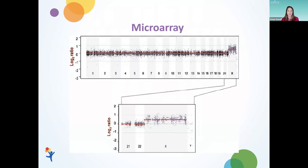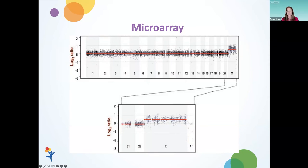We can also do genetic testing diagnostically with a microarray. A microarray is a microscopic test that uses little probes that attach along the length of the chromosome — this represents the length of chromosome 1, chromosome 2, chromosome 3, and so forth. Because we have pairs of chromosomes, we would anticipate two copies of each probe along the length. What we see that's diagnostic in this result is an over-representation of the probes attached to the X chromosome, representing an extra X chromosome above and beyond two. So this would diagnose three Xs.